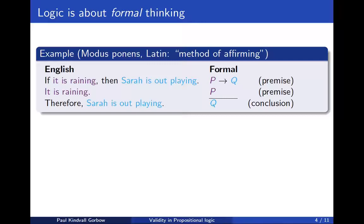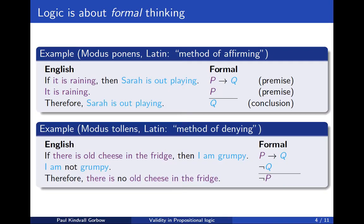Logic is about formal thinking. We can take sentences and analyze their propositional structure. So in the case of the first premise of this argument, this is a sentence saying if it is raining then Sarah is out playing. It actually consists of two different propositions — it is raining and Sarah is out playing — and it connects them with this connector called material implication. So therefore this argument can be analyzed as done on the right side. We simply extract the logical form of the argument.